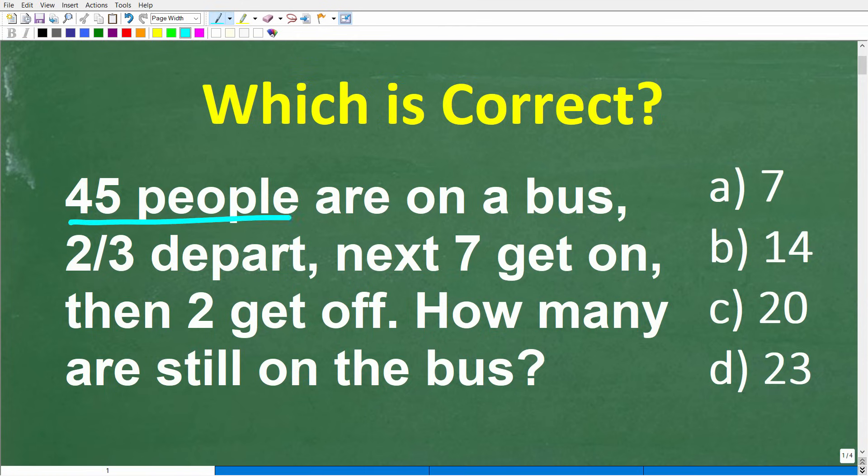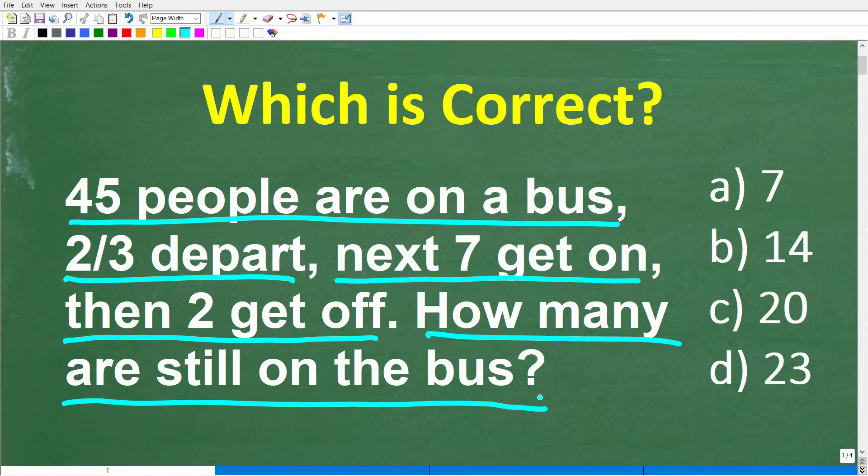45 people are on a bus. Two-thirds depart. Next, seven people get on the bus. Then after that, two people get off. After all this activity, how many people are still on the bus?